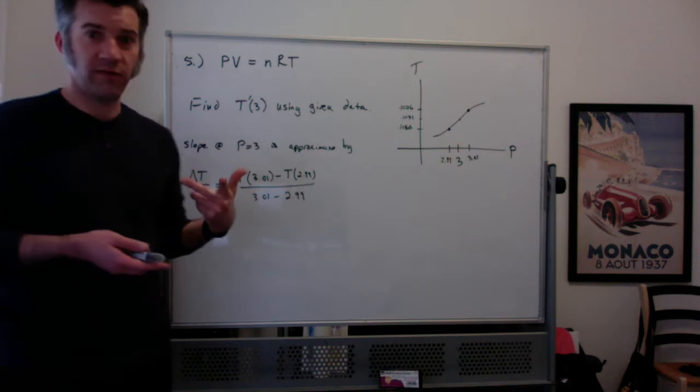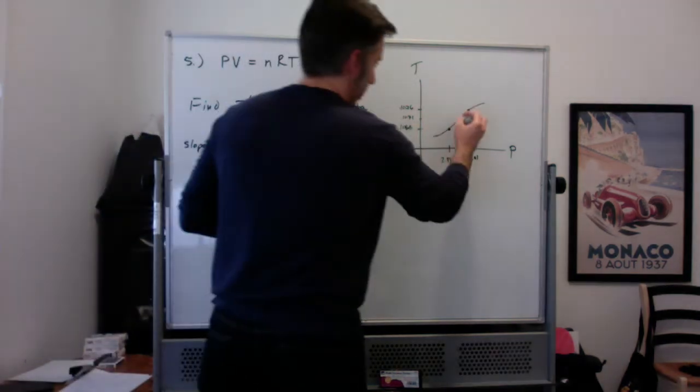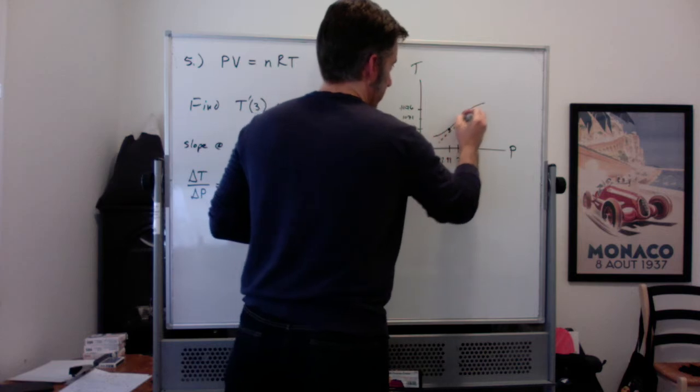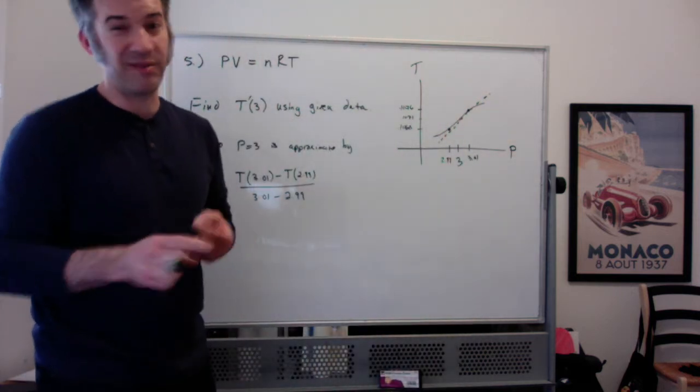If you try to find the derivative at 3, you're trying to find the slope of the tangent line at 3. The idea is basically that if you pick the points that are closest to 3 but not actually 3...